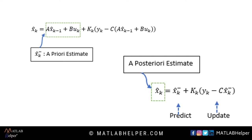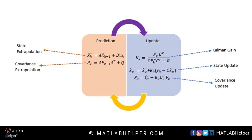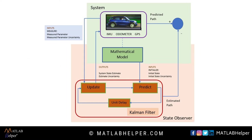The posteriori estimate uses measurements from sensors and incorporates them into the prediction states to update the priori estimate. Therefore, we can conclude that Kalman filter follows two steps: the prediction step, where it predicts the future state of the system for given past measurements, and the update step, which estimates the current state of the system for the given measurement at that time step.